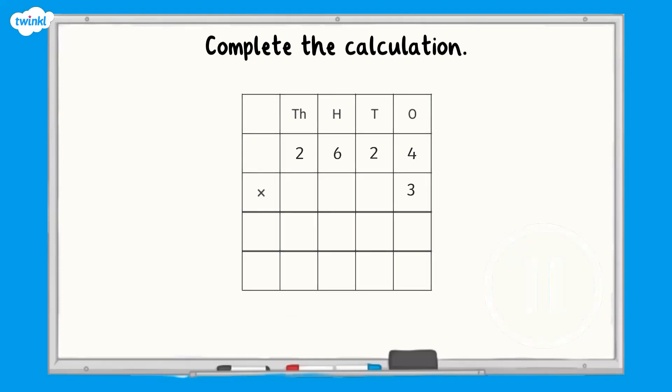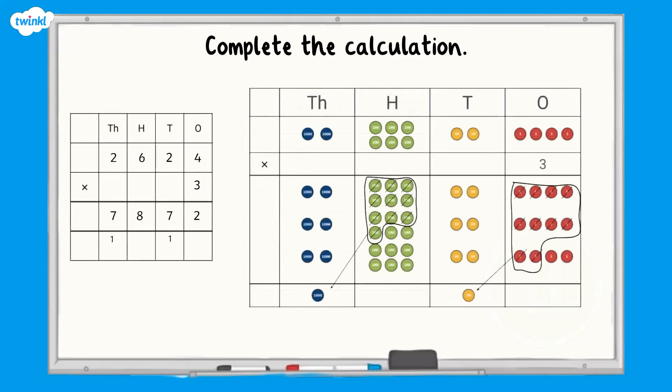How did you get on? Two thousand, six hundred and twenty-four multiplied by three equals seven thousand, eight hundred and seventy-two.